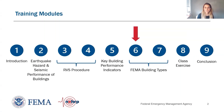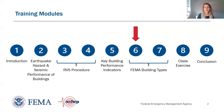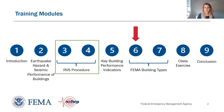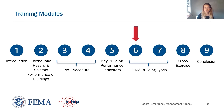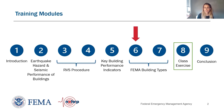You're watching video six of nine in this training series. Module one was an introduction to FEMA P154. Module two covered earthquake hazard and seismic performance of buildings. Modules three and four covered the rapid visual screening, or RVS, process. Module five went over key building performance indicators. This module, module six, covers FEMA building types — wood and steel. Module seven will cover concrete and masonry FEMA building types. Module eight will be a class exercise and module nine will be concluding remarks.